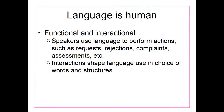Language as humans use it is both functional and interactional. It's functional in the way that we use it to perform actions such as requests — I can ask my friend to loan me $20. We can use it to perform rejections, so my friend can say I don't want to loan you $20. We can use it to make a complaint, like saying you're a jerk for not loaning me $20. And we can use it to make assessments, such as you should have saved money so I wouldn't have to loan you $20. So there are all these different functions that we can use language to perform.